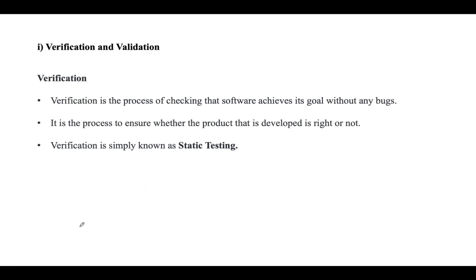Verification and validation is a process of investigating whether the software system satisfies specifications and standards and fulfills the required purpose. It is a process of checking that software achieves its goal without any bugs. It is a process to ensure whether the product which is developed is right or not — verifying whether the developed product fulfills the requirements.